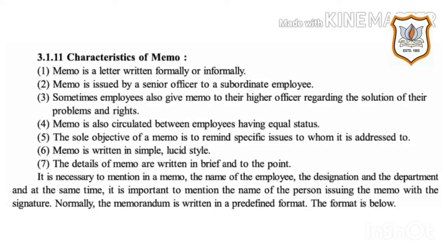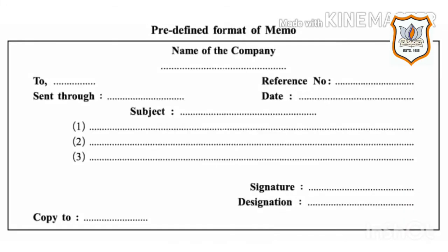Normally, the memorandum is written in a predefined format. The predefined format of memo is as follows: On the top, the name of the company is printed. Then on the right hand side: reference number, date. Then on the left hand side: To, then Sent Through, then Subject, then points — first, second, third. Then on the right hand side: signature and then designation. Then on the left hand side: Copy To.